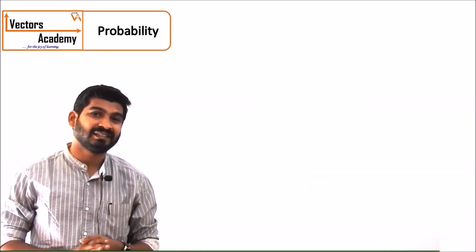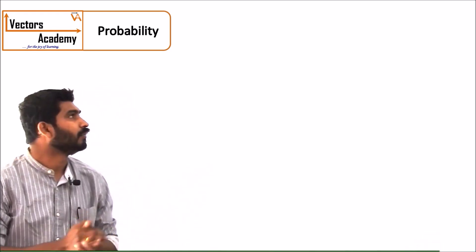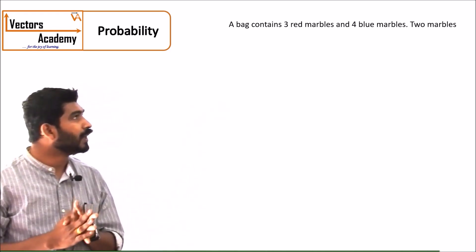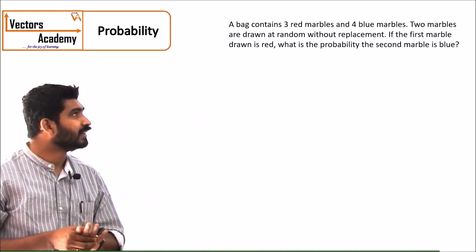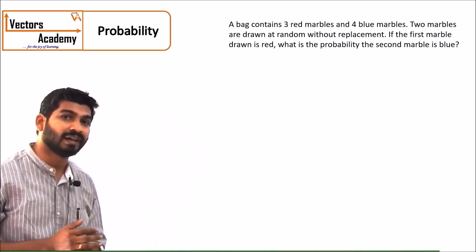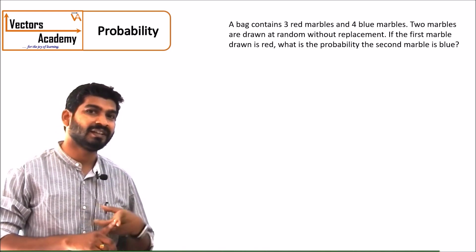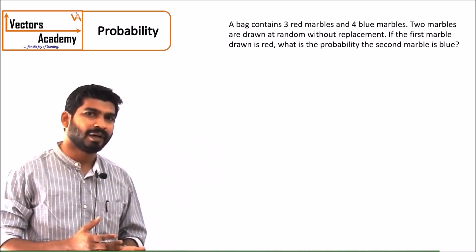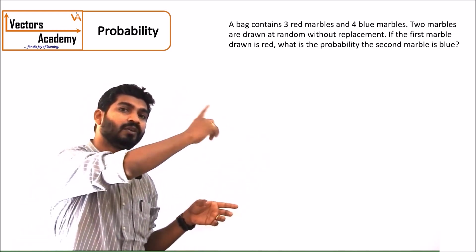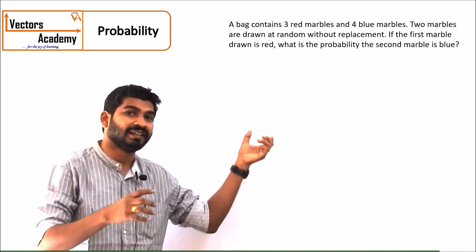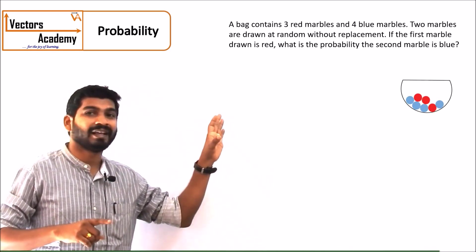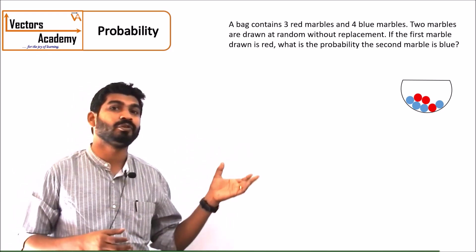Now we will look at questions based on conditional probability. There is a bag which contains 3 red and 4 blue marbles, and 2 marbles are drawn at random. We have to find the probability that if the first marble drawn is red, then the second marble is blue. There are 2 events: the first marble is red and the second is blue. Since a red marble is already drawn, the number of balls has decreased, so the probability of the second event depends on the first. This is called conditional probability, and such events are dependent events.